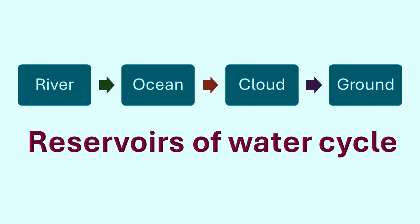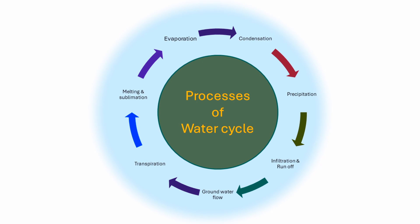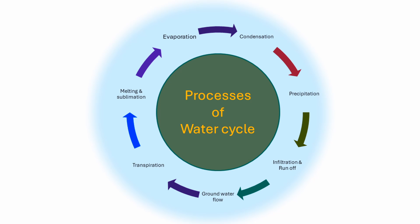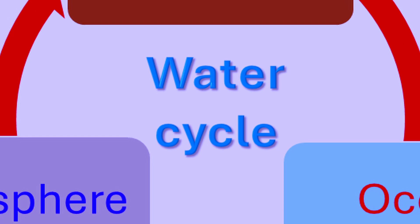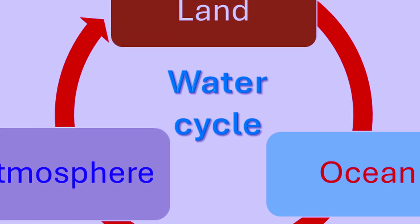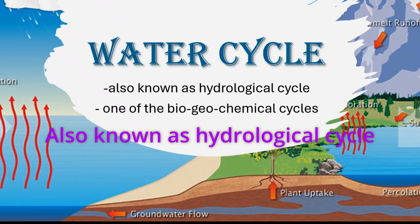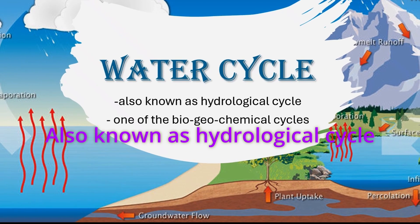It involves the movement of water through various stages, changing between different states: liquid, gas, and solid, and moving between the atmosphere, land, and oceans. This biogeochemical cycle is responsible for maintaining weather conditions.